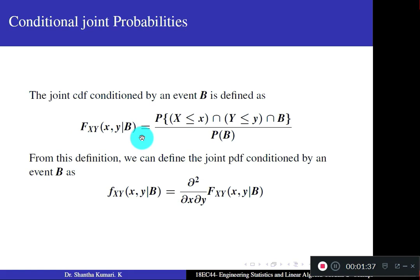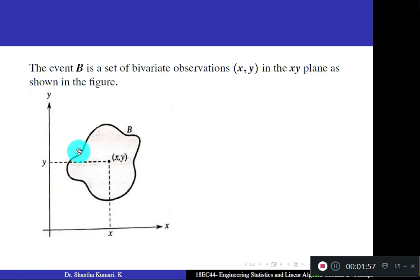From this definition, if the conditional CDF is known, how do we find the conditional PDF? We differentiate the conditional CDF once with respect to Y and once with respect to X — totally twice — to get the conditional PDF. The event B will usually be the values of X and Y lying in some region.